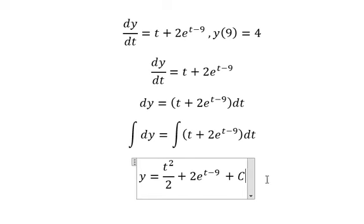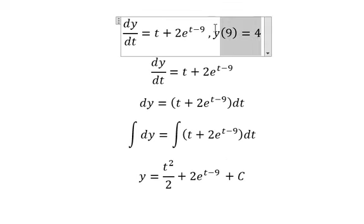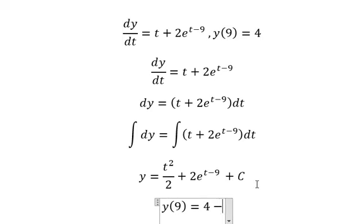And we put about C. Now we have the conditions that means we got about t equals to number 9, y equals to number 4.